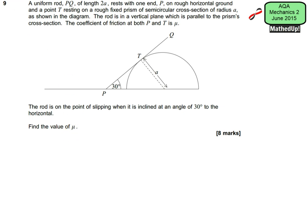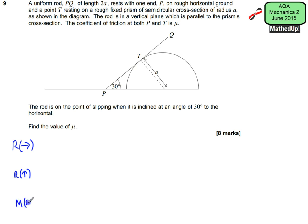This is a classic Mechanics 2 question — another variation is the ladder against a wall. With these questions, we always resolve in two perpendicular directions — horizontal and vertical — and also take moments about a particular point, in this case P. We then combine this information to work out the unknown, which here is the coefficient of friction.